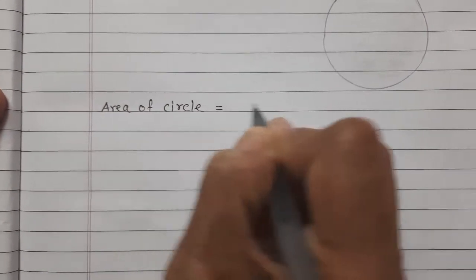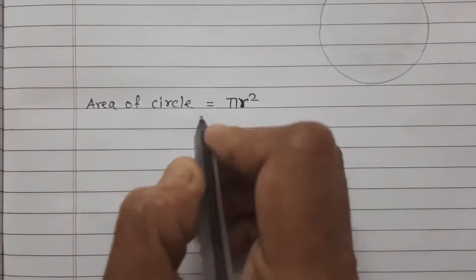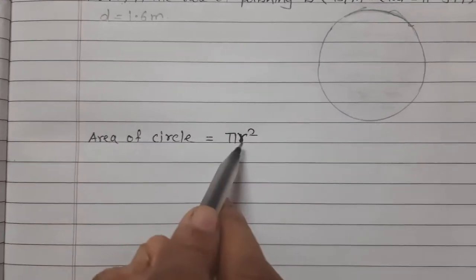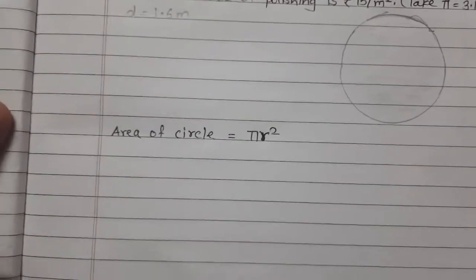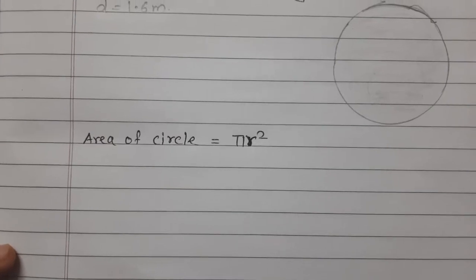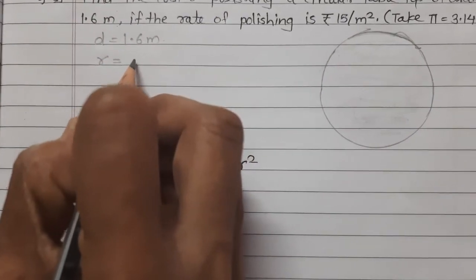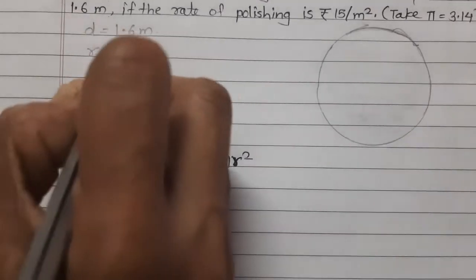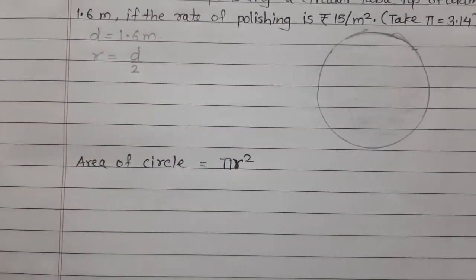Area of circle is equal to pi r square. We know the diameter, and we need the radius. Radius is half of the diameter, so we divide the diameter by 2.